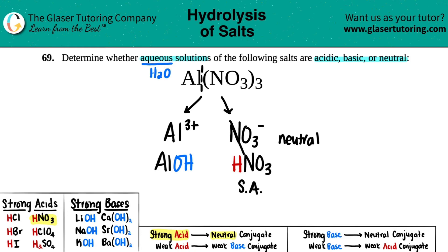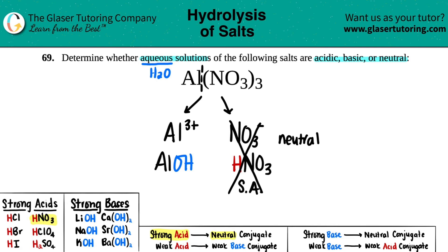So the nitrate component doesn't really matter for acidity or basicity — it's neutral. Now for aluminum with hydroxide: scanning my six strong bases — lithium, sodium, potassium, calcium, strontium, and barium — aluminum is not one of them. So it can't be a strong base; it would be a weak base. With a weak base, the conjugate is a weak acid, so the aluminum ion you're starting with is basically acidic.